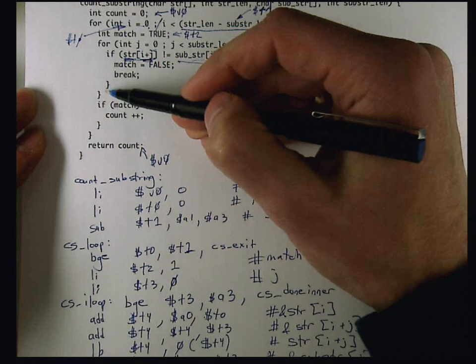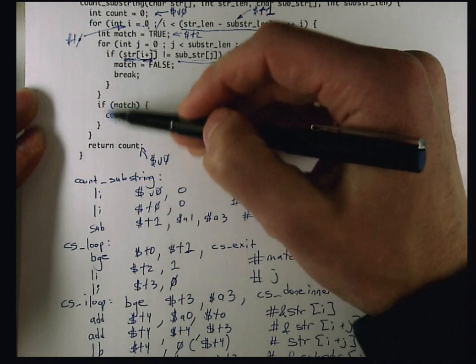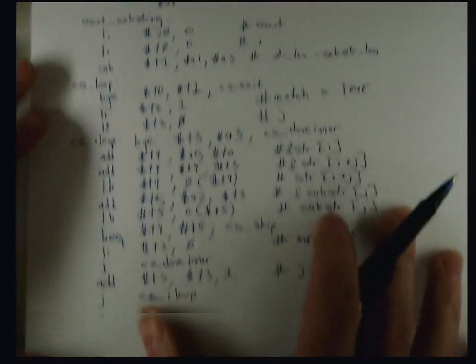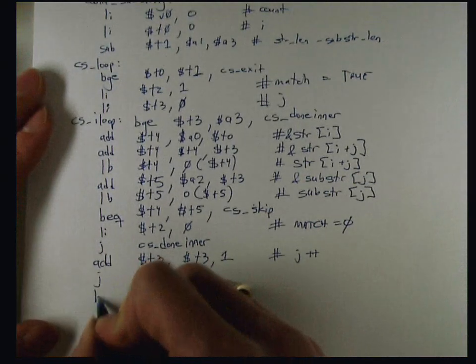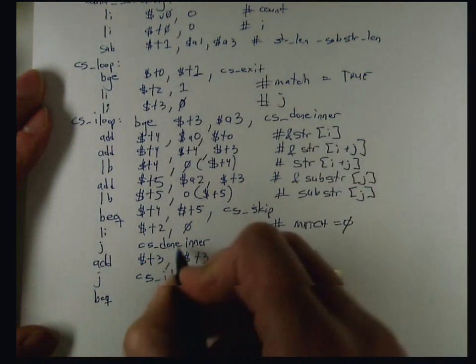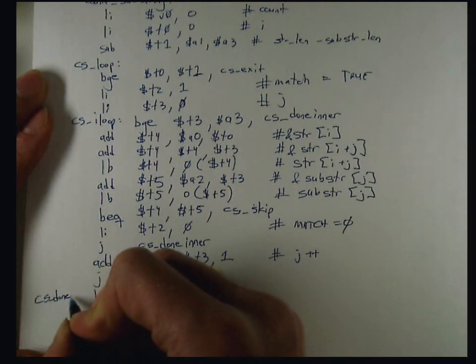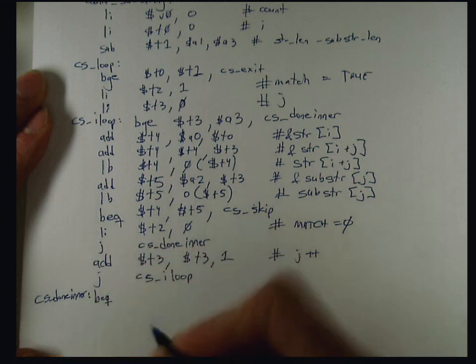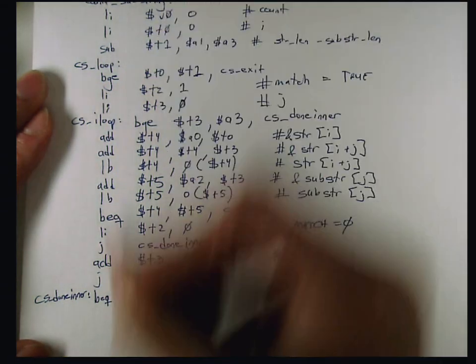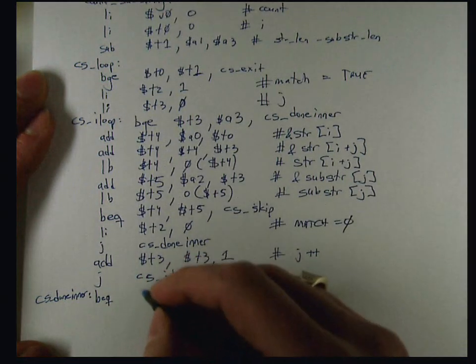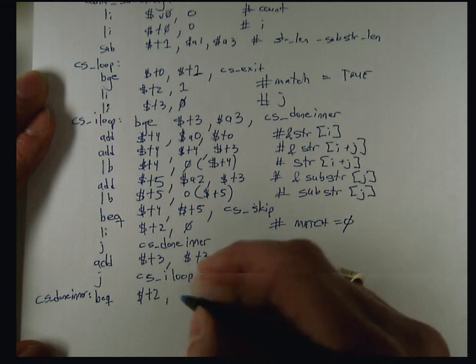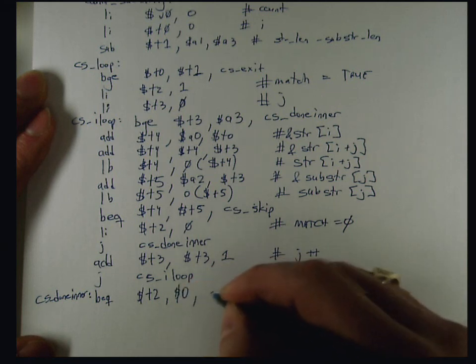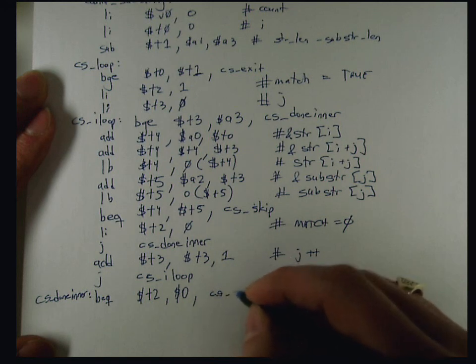I've now finished the inner loop, and I want to do this check to see if match is true or not. I'm going to invert this condition, see if match is equal to zero. I have to do the CS done inner label for the end of the loop, and then I'm going to check to see whether match is zero, so match was in register T2. I want to check to see if it's zero, because if it is zero, I don't want to increment count. So if that's equal to zero, I'm going to do CS skip two.